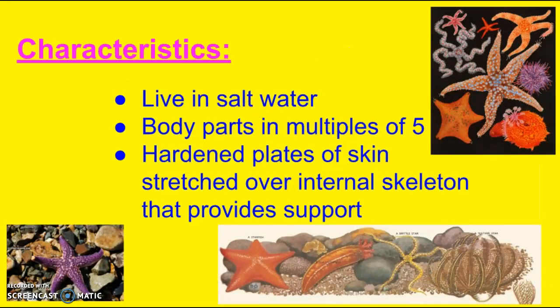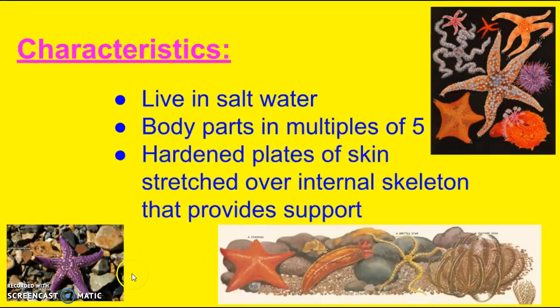Let's talk about some of the characteristics. They live in salt water, so your oceans. They have body parts in multiples of five — think of a starfish, that's probably one that everybody has seen at some point. You can see how we have one, two, three, four, five arms. It also has hardened plates of skin stretched over an internal skeleton, and this helps provide support. If you've ever touched a starfish, you can feel how it's kind of hard on the outside — that's those hardened plates of skin.